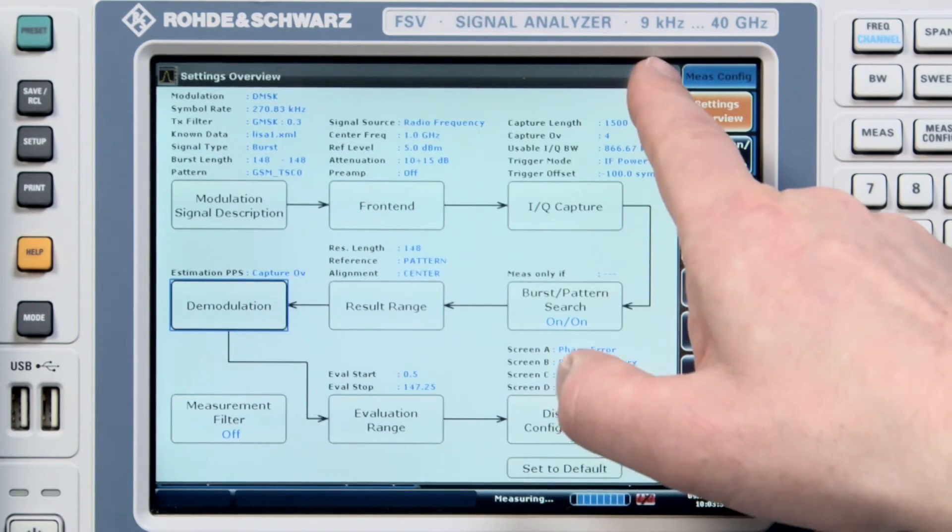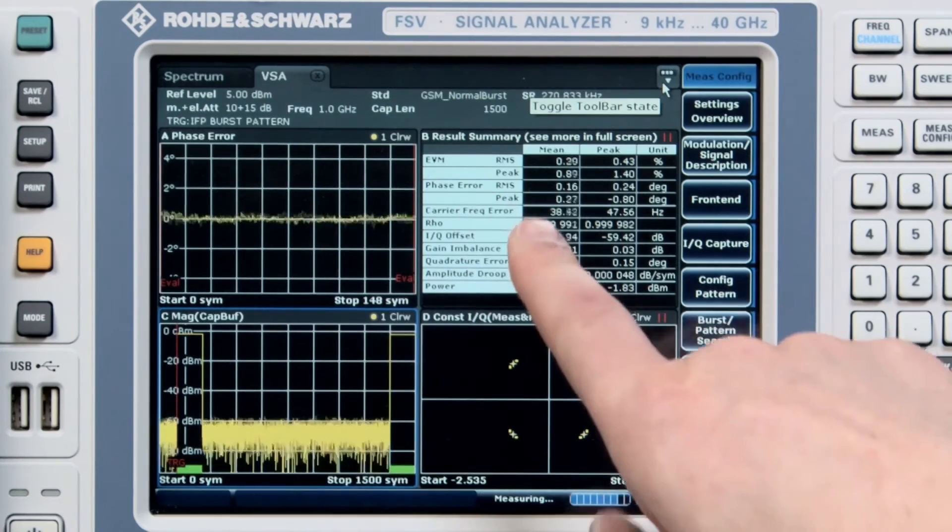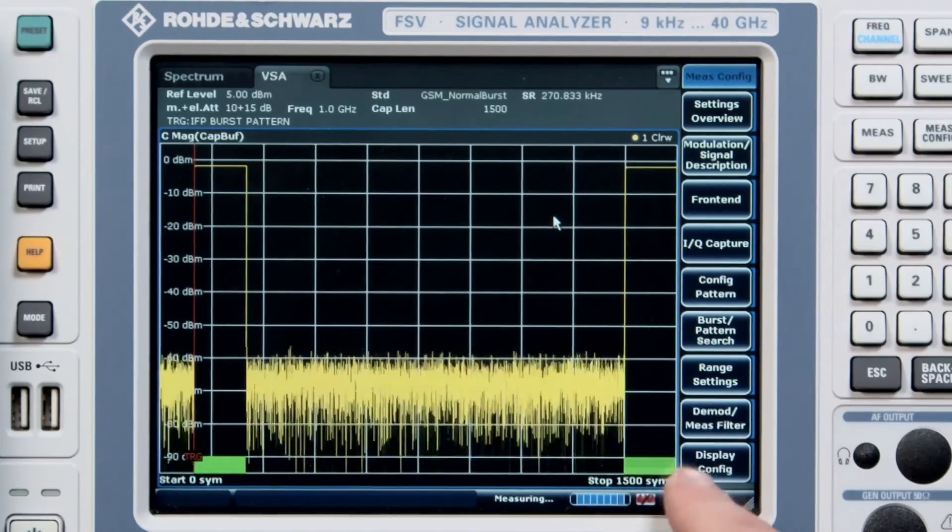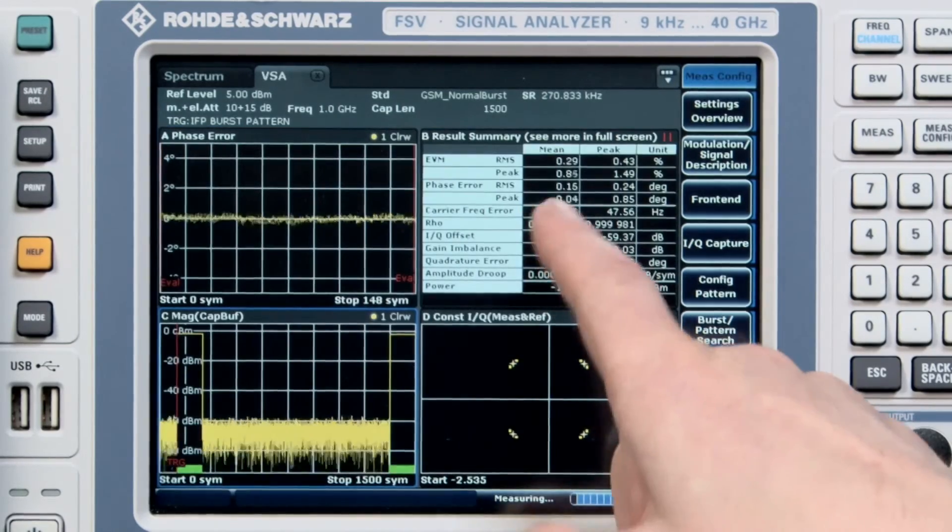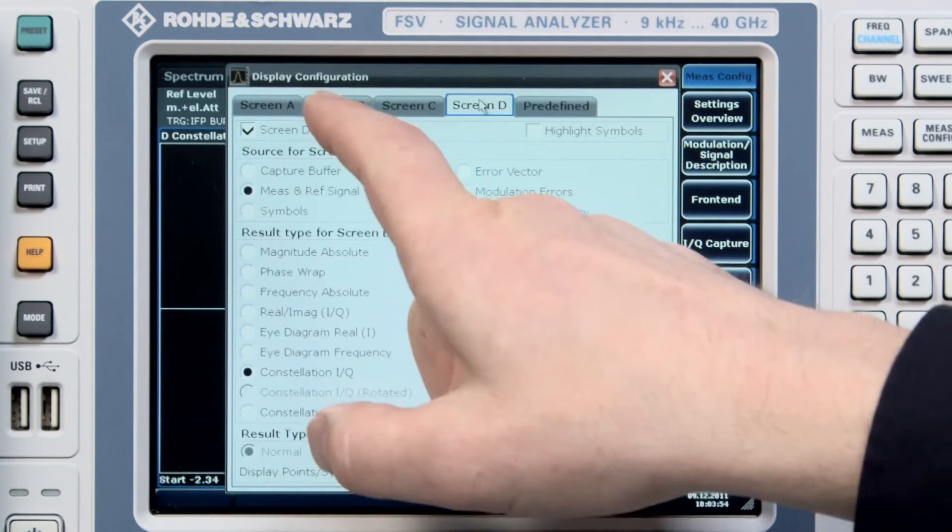That's enabled by default when the file is loaded, and then we just need to display the results on screen. We're just going to set up a split screen setup here using two screens so that we have a bit error rate result and a constellation diagram.